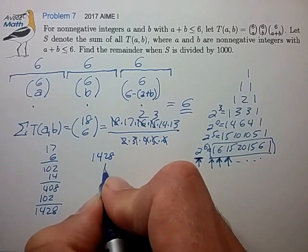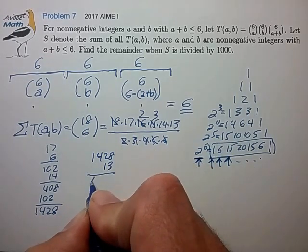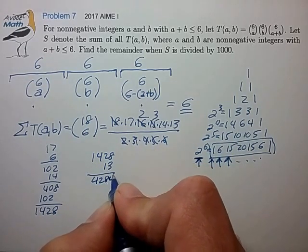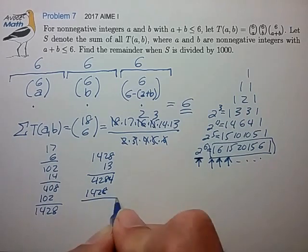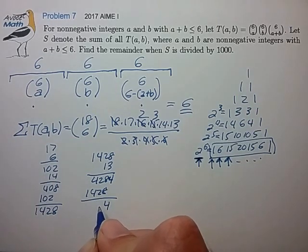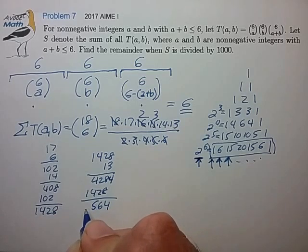And then finally calculate 1428 times 13. And that's 4, 2, 8, 4, 14, 28. And that sums to 4, 6, 5, and whatever.